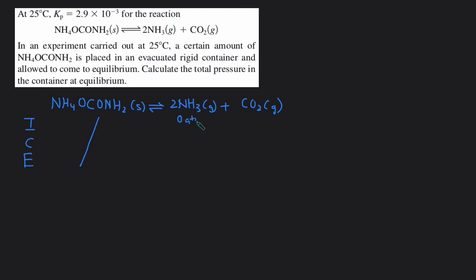And then there's no mention of any product, so we'll start with 0 atm and 0 atm for both the gases. This means that the reaction will be proceeding to the right, so this will be plus 2x, and then this will be plus x. The E line will just be 2x and x.